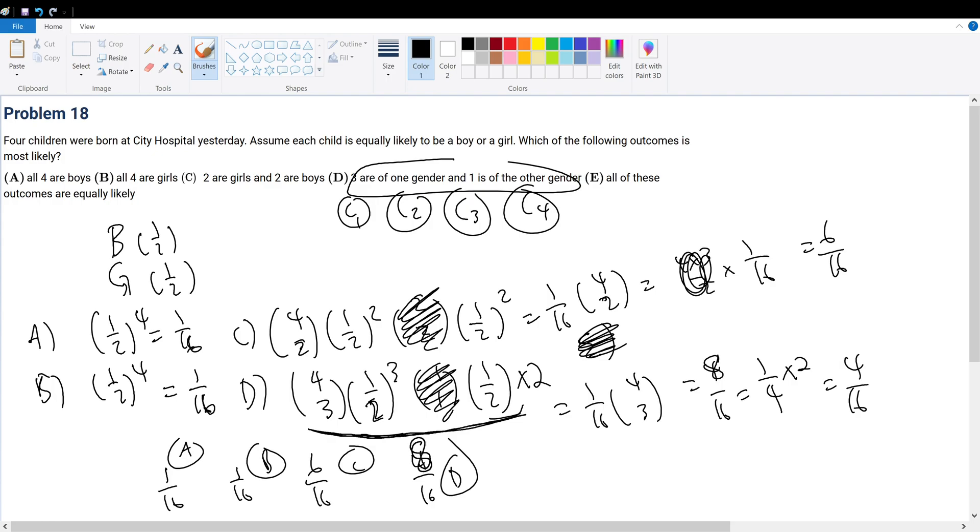Right, I was like, why is this looking off? So 8 over 16 would be your answer. So that means D is the largest, so D is your answer.